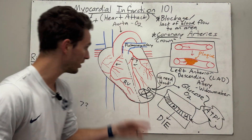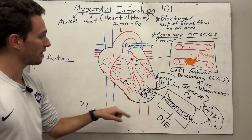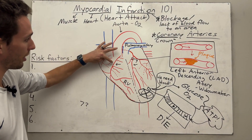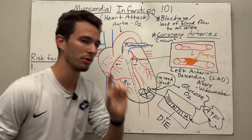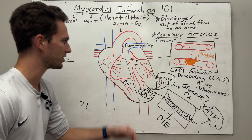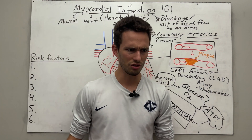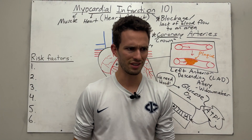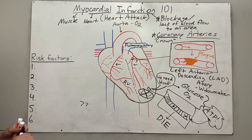It could happen in other arteries too. There's a circumflex artery here, and the right coronary artery feeding the right side of the heart. But the most common for some reason is that LAD. So the question is: who's at risk for this and how does it develop?